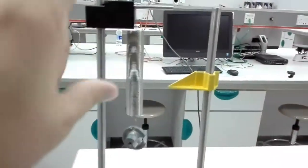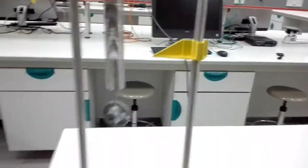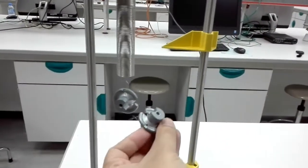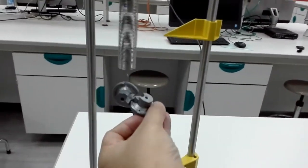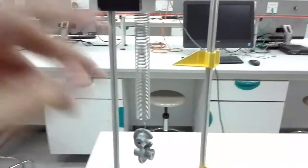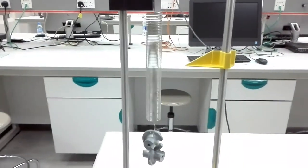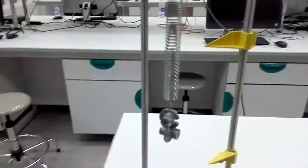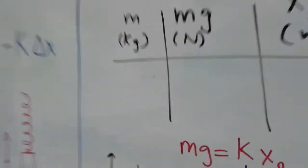So L0 is fixed, the initial length, and you will keep on adding masses. The way you do it is by using these gaps. You'll keep on adding masses and measuring the extension of the spring as a result of adding these masses, and then you will make a plot. Let's see what you have to do.